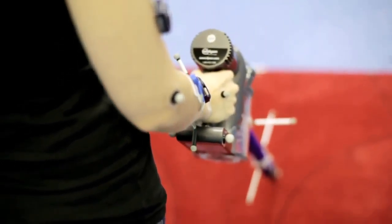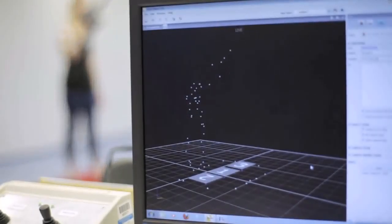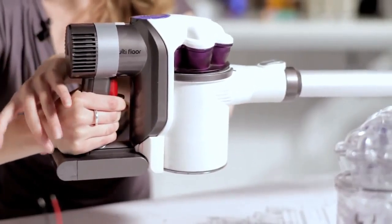We started to think about levers and where the forces sit and how that affects how the machine is used. Our testing led us to this configuration which has the heaviest components—the motor and the battery—positioned right next to the hand.